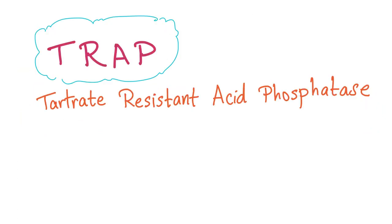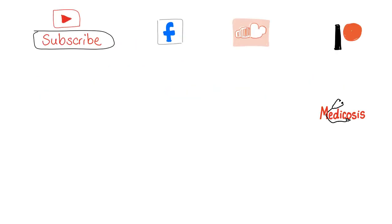There is a specific type of acid phosphatase known as tartrate-resistant acid phosphatase. This will be discussed in a separate video and will be particularly important when talking about hairy cell leukemia. This brings us to the end of the video.